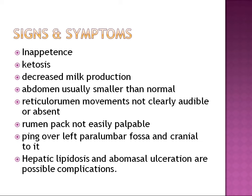The signs and symptoms associated with left displaced abomasum include inappetence, ketosis, and decreased milk production. The abdomen is usually smaller than normal. Reticular rumen movements will not be clearly audible or will be completely absent. The rumen pack will not be easily palpable, and a ping sound over the left paralumbar fossa or cranial to it will be detected. Hepatic lipidosis and abomasal ulcerations are possible complicated signs.